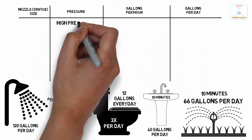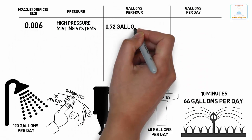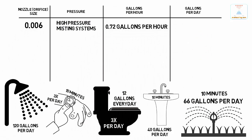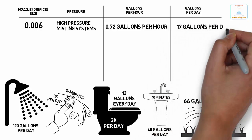The high pressure misting system consumes about 0.72 gallons per hour and approximately 17 gallons per day.